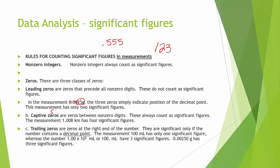Captive zeros, also called sandwiched zeros, are between two non-zero digits — they always get to count. Because if you removed them, they would definitely change the value. So a number like 1007 has four significant figures.